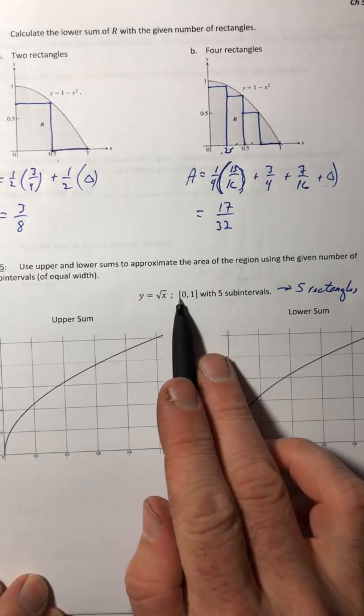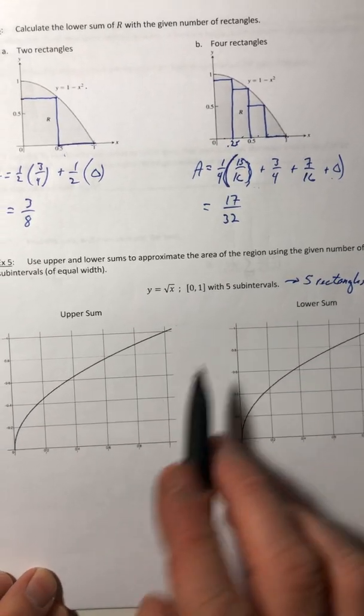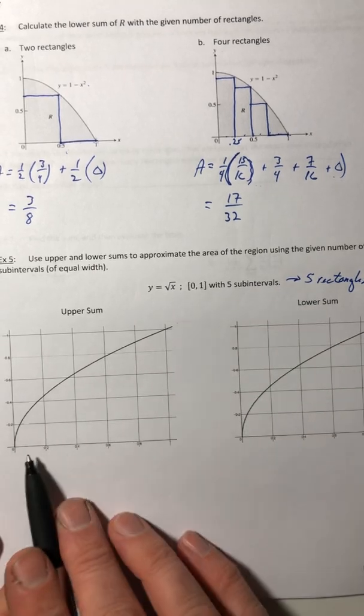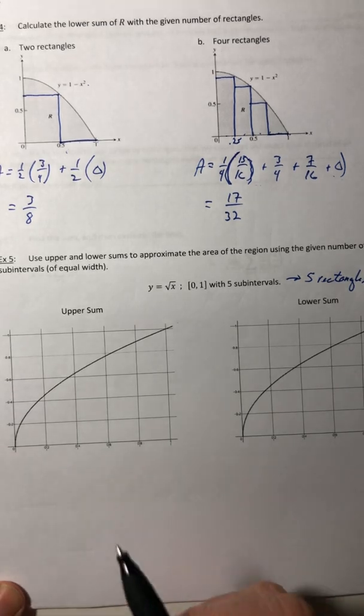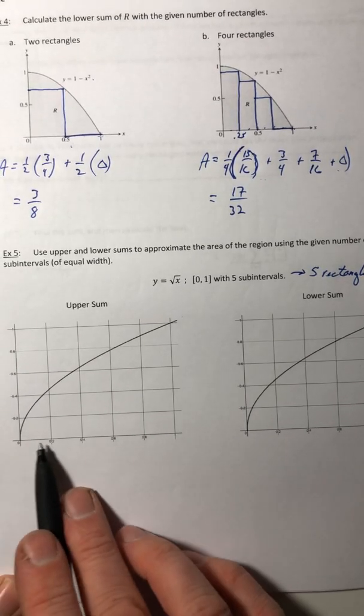So we're gonna go from just zero to one with five rectangles. So that means each rectangle is gonna have a width of 0.2 or a fifth. So each base is a fifth.